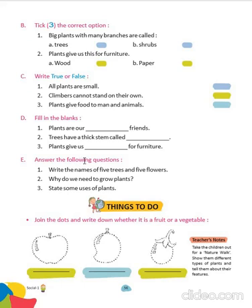Exercise E — answer the following questions. Write the names of five trees and five flowers. Five trees are: an apple tree, a gulmohar tree, a eucalyptus tree, a banyan tree, and a neem tree. Five flowers are: rose, jasmine, sunflower, lotus, and lily.